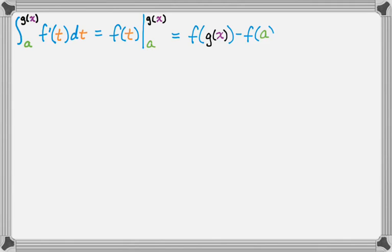It's actually possible that the upper bound is a function of x, so let's call it g(x). And do the same thing, right? So if f'(t) is a derivative of f(t), then I can use the first fundamental theorem to say that this is f(t) from a to g(x), which means it's f(g(x)) minus f(a).